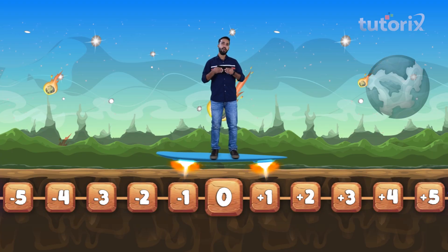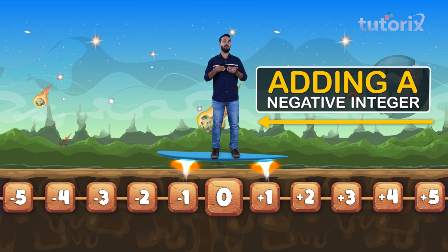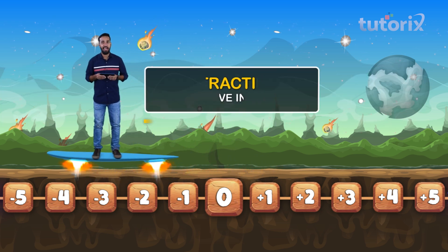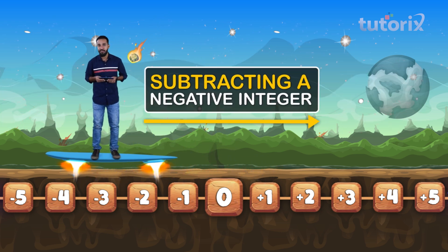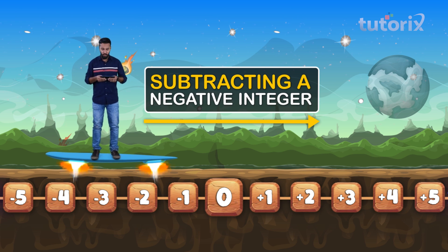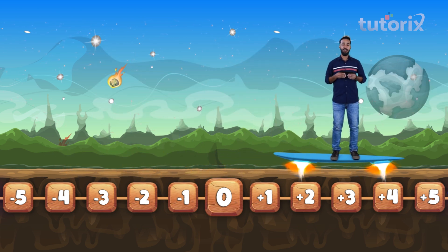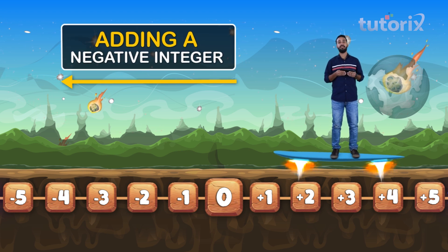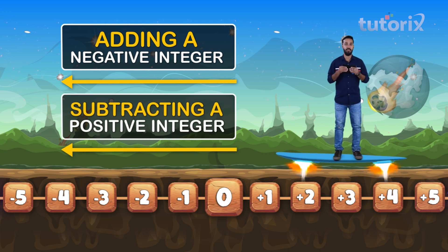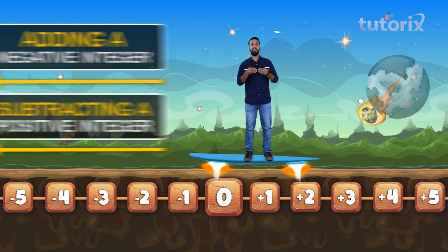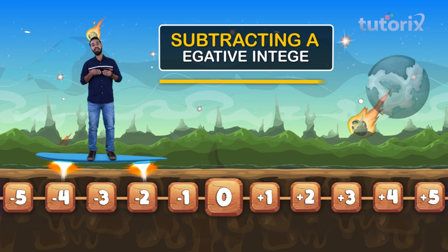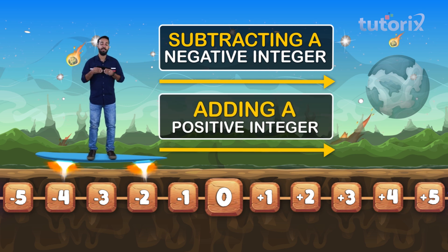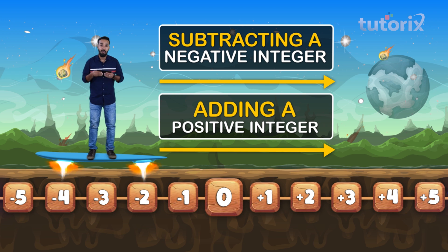What happens when we add a negative number or a negative integer? We move to the left. And when we subtract a negative integer? Correct — we move to the right. So remember: adding a negative number is quite similar to subtracting a positive number, because in both scenarios we move to the left. And subtracting a negative number is quite similar to adding a positive number, because in both scenarios we move to the right.